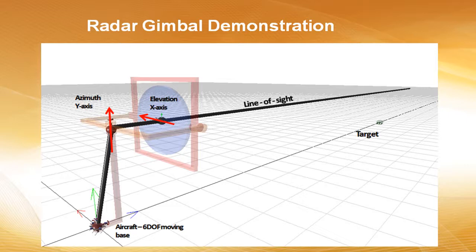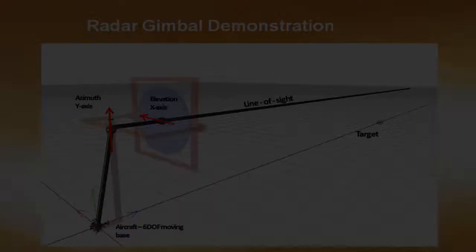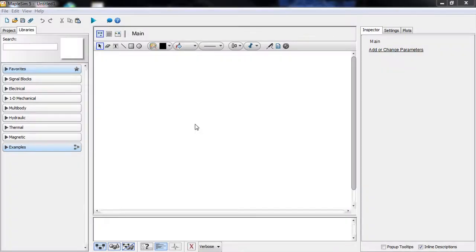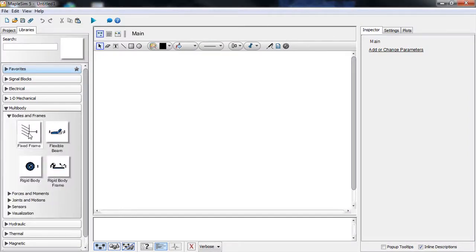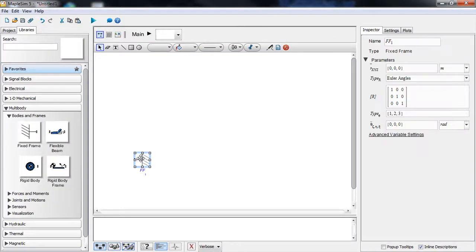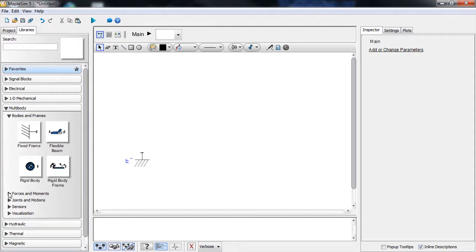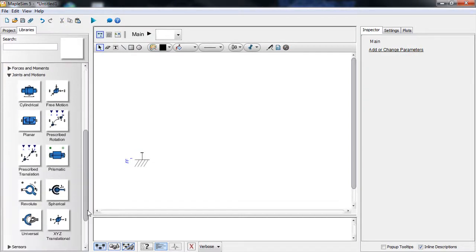We have a six-degree-of-freedom aircraft with position and pitch, roll, yaw angles that define the orientation of the aircraft, and we need to find the elevation and azimuth angles. To solve this problem, we open up MapleSim and create a geometric representation of the problem.